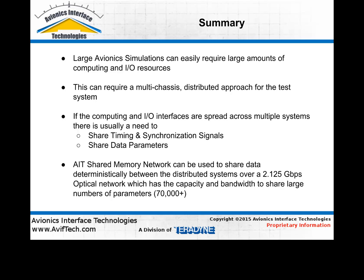Large avionics simulations can easily require large amounts of computing resources and I/O resources. Multiple real-time processors can be required to compute in the range of 100,000 dynamic parameters, and up to thousands of I/O channels can be required. As a result, these avionics simulations often require multiple chassis or a distributed approach. Where computing and I/O resources are spread across multiple systems, you'll typically need to share timing and synchronization signals as well as data parameters. A shared memory network implemented with AIT's modules allows sharing of these data parameters and synchronization through the distribution and sharing of events.